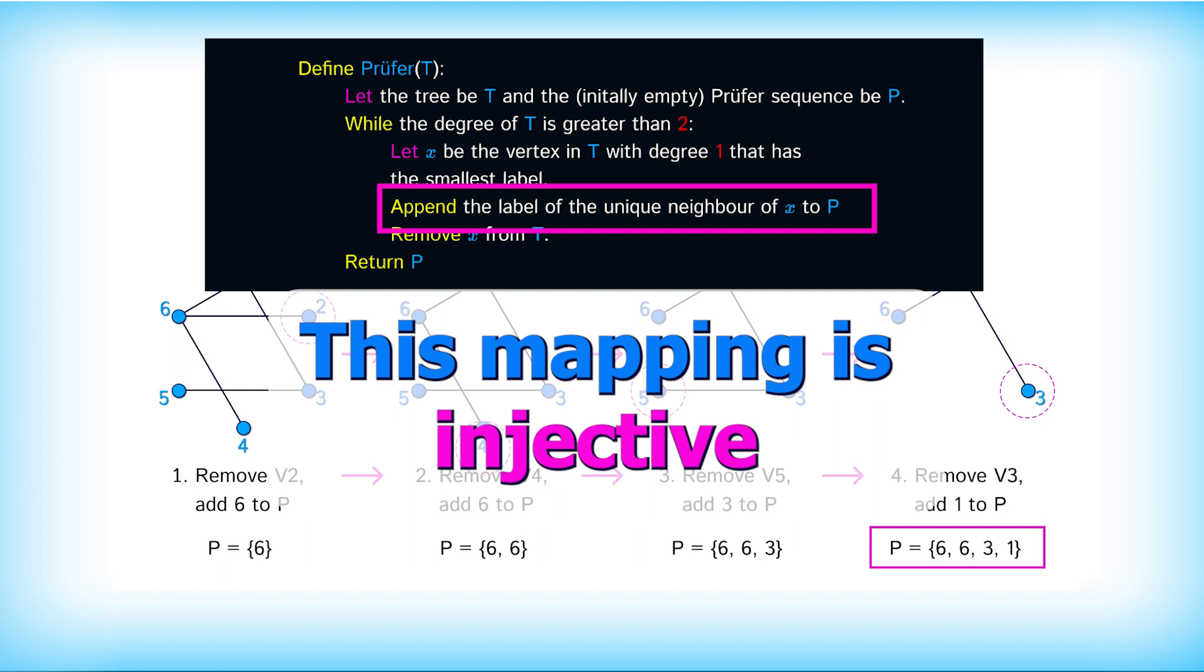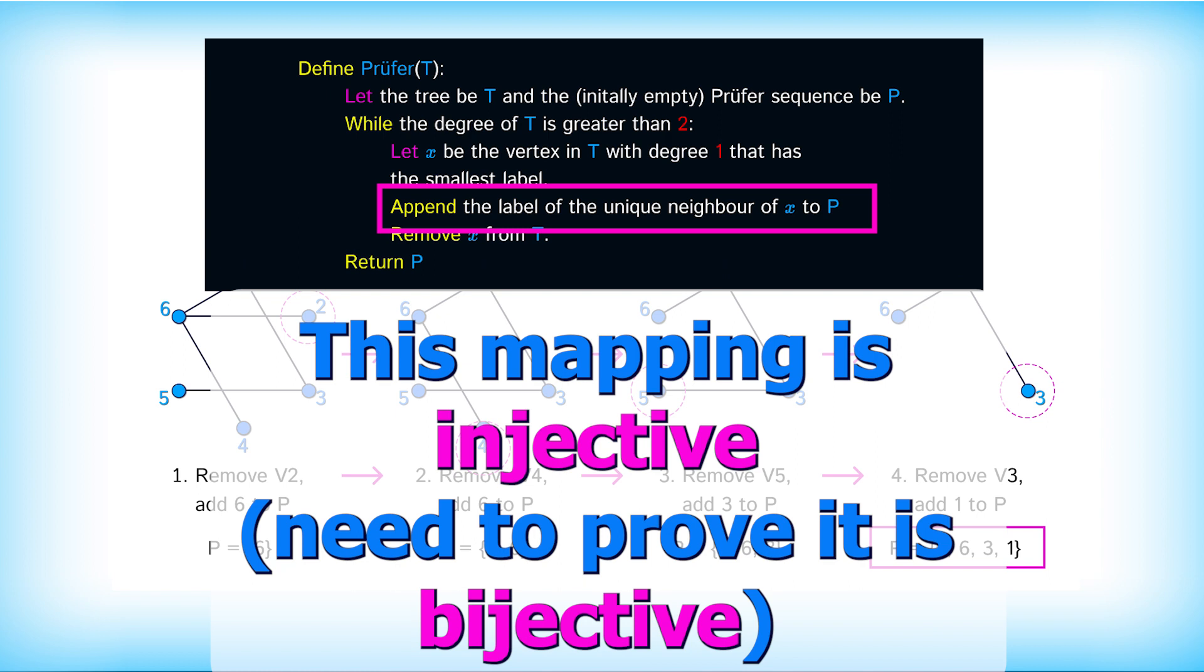All we need to do now is go the other way and prove that every proof of sequence also maps to a unique tree. And that would be enough to prove that the number of proof of sequences is exactly equal to the number of labeled trees.